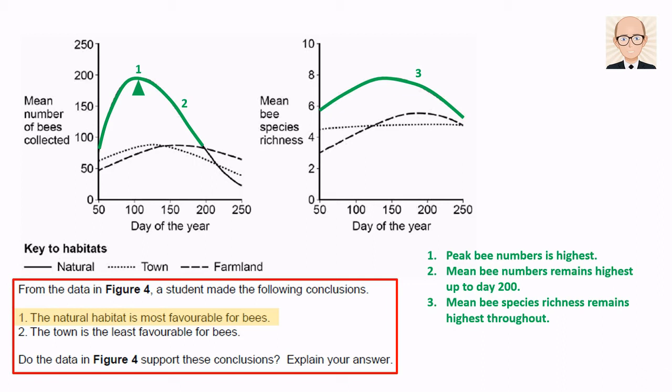However, mean bee numbers do drop to the lowest out of the three habitats for the last 30 days. So whether we choose to say the student's conclusion is supported or not, there is some evidence to back up that claim.